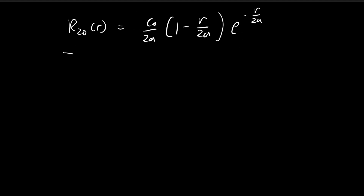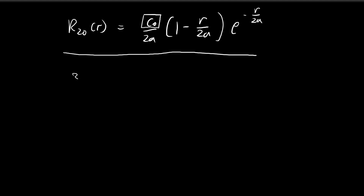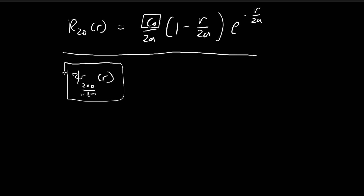In this video, we're going to normalize this function. Recall that we obtained this function in one of the earlier examples in the book. We can normalize it by finding what the constant C0 should be — C0 is still an arbitrary constant — and we are going to find an exact value for C0 that will allow this function to be normalized. Once we find what R20 is, we can construct our function ψ_200(r). The numbers correspond to the quantum numbers: 2 is n, 0 is l, and 0 is m. In order to find this expression, we will first need to normalize R20.